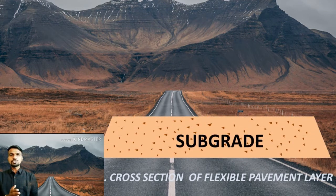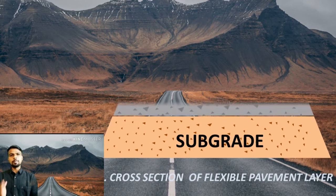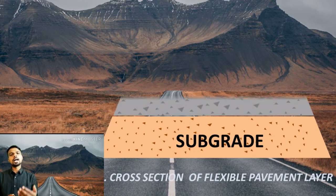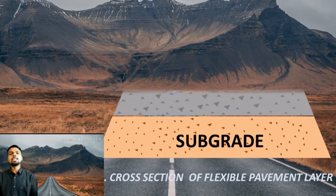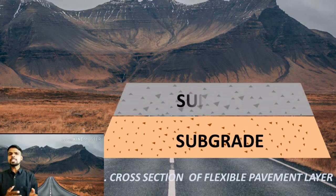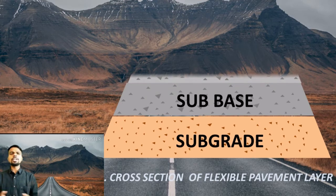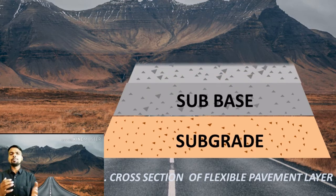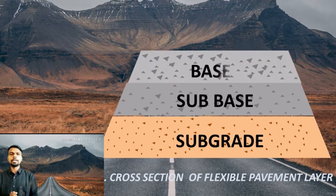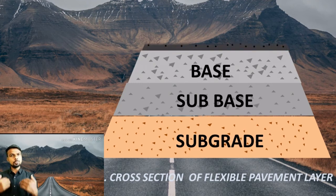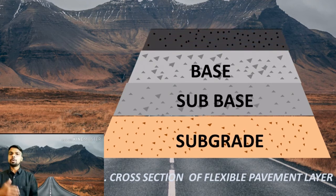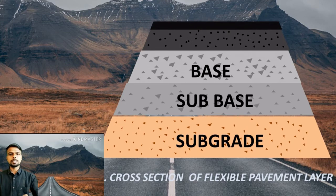There are three layers of flexible pavement above the subgrade. The first one is the sub base layer, next is the base layer, and the last one is the bituminous layer. Sub base and base may be granular, cement treated, or a combination of both. The bituminous layer comprises two different types: bituminous base and bituminous surface.